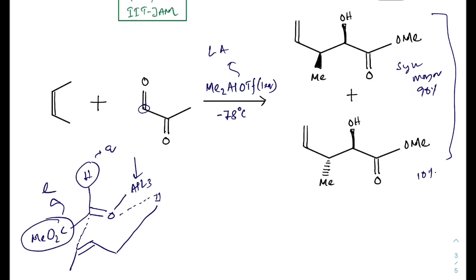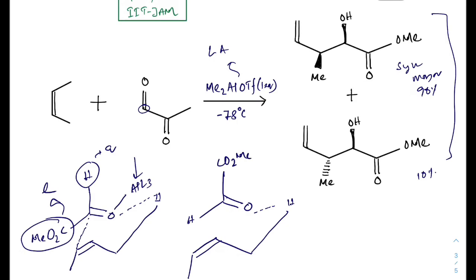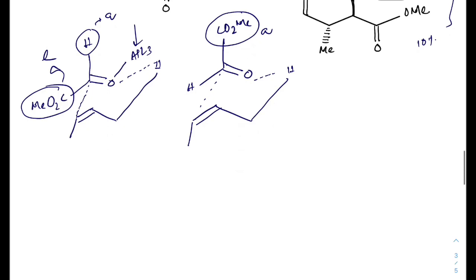With the Lewis acid coordinated, in this transition state the CO₂Me is equatorial and the hydrogen is axial. But if we draw another possible transition state using the other face of the aldehyde carbon, the CO₂Me will be axial and the hydrogen will be equatorial. In this transition state the CO₂Me is axial, so this transition state is less favorable than the first. From the more favorable transition state we obtain the major product.